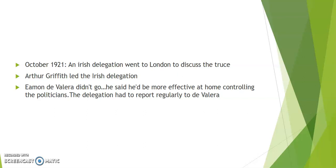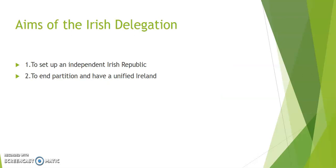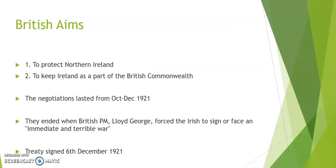The delegation had two main objectives: to set up an independent Irish Republic completely independent from Britain, and to end the partition and have a unified Ireland. The British delegation was led by Prime Minister David Lloyd George, and its aims included keeping Ireland within the British Commonwealth — as they feared other Commonwealth members would also leave if Ireland were successful — and to protect the state of Northern Ireland. Talks dragged on until December.